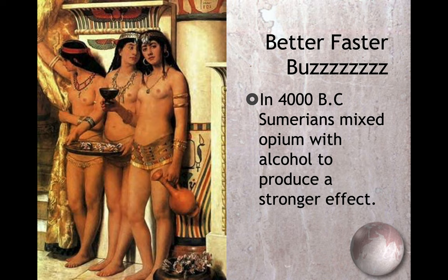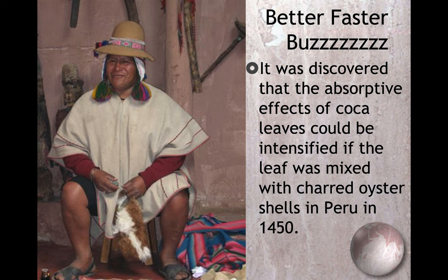In 4000 BC, Sumerians mixed opium with alcohol to produce a stronger effect. It was discovered that the absorptive effects of coca leaves could be intensified if the leaf was mixed with charred oyster shells in Peru in 1450 — that's before Columbus sailed the ocean blue in 1492.